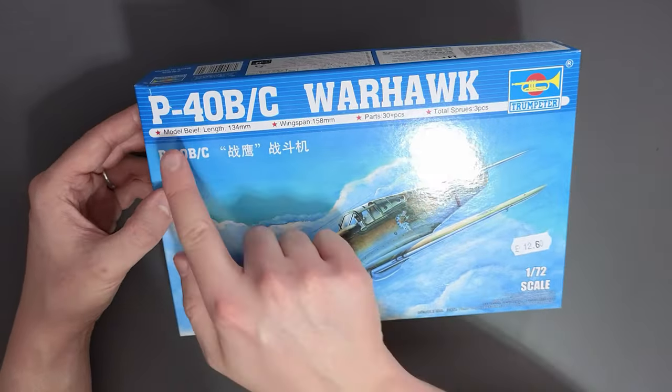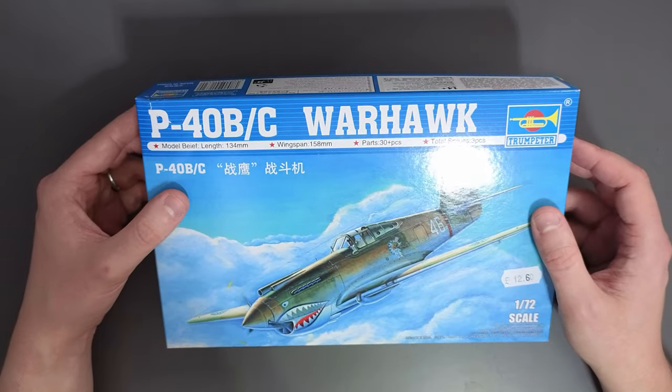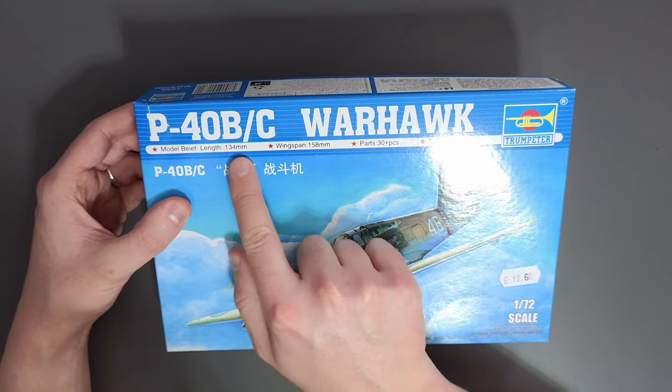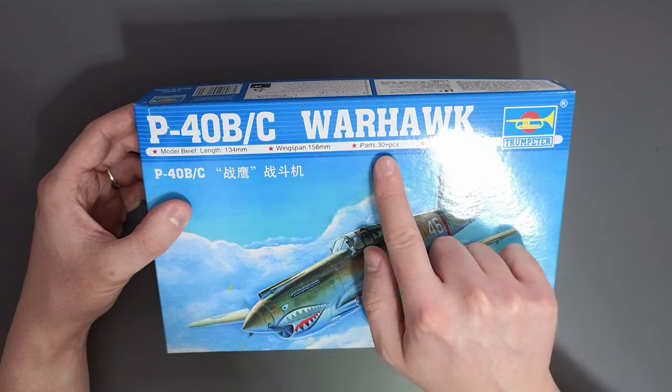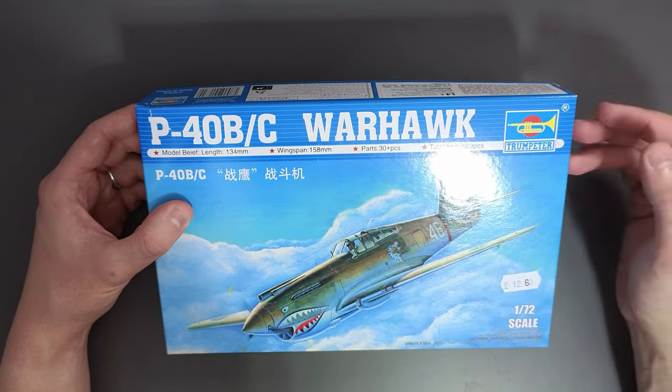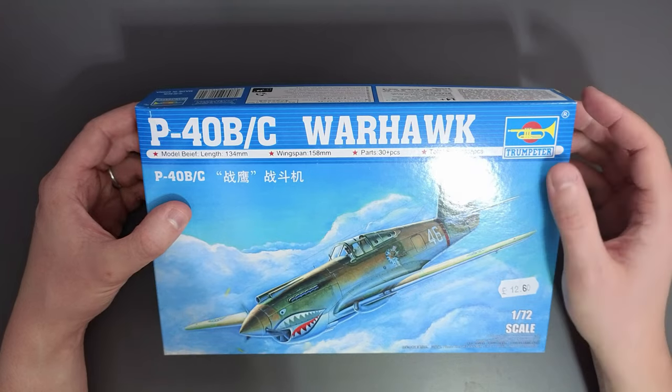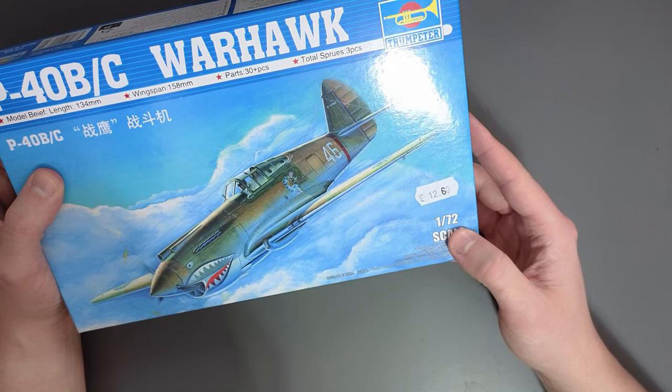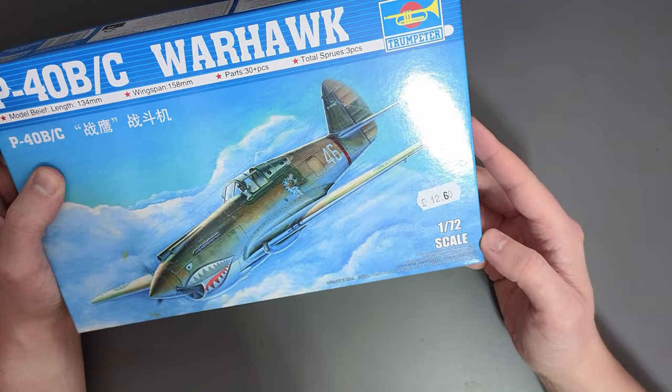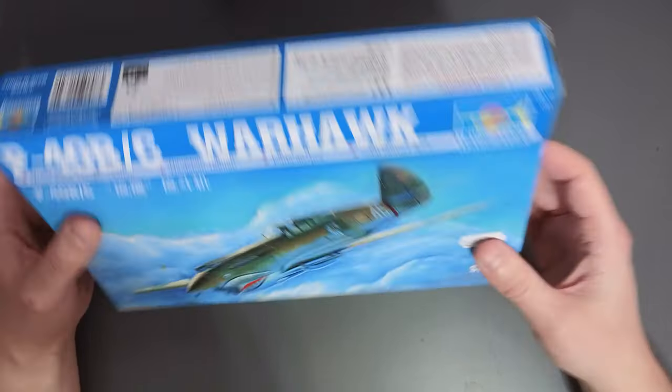Up the top here you can see that the English translation has struggled at times but we'll just carry on. We've got the length of the aircraft at 134 millimeters, a wingspan of 158. There are 30 plus pieces so they've not told us exactly how many parts are in the kit but there are three sprues.